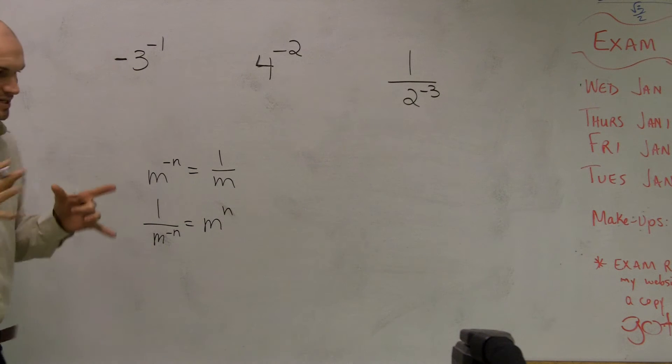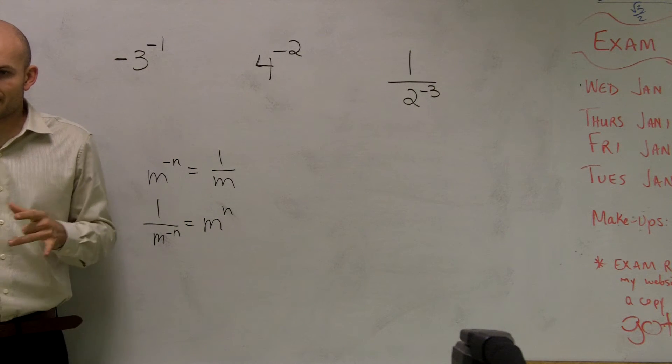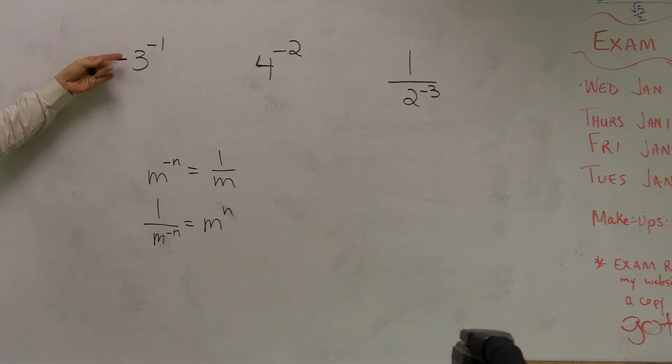remember the negative exponent doesn't tell you that the number is negative. It's just explaining how the exponent can be represented. So this is a negative 3. My number is still going to be negative.